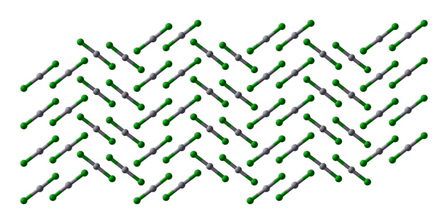Halocarbons react with amalgamated aluminum in the Barbier reaction. These alkylaluminum compounds are nucleophilic and can be used in a similar fashion to the Grignard reagent. Amalgamated aluminum is also used as a reducing agent in organic synthesis. Zinc is also commonly amalgamated using mercuric chloride.